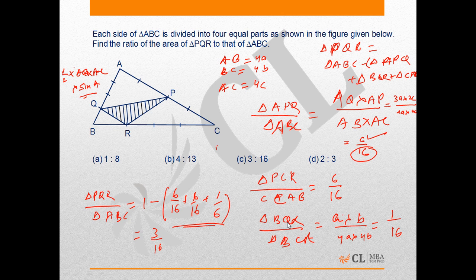Similarly, triangle PCR is 6 and BQR is 1. If area of triangle ABC is 16, then AQP is 6 plus CPR which is 6 plus BQR which is 1, totaling 13. Therefore, area of triangle PQR will be 16 minus 13, which is 3. The required ratio is 3 to 16, which is option C.